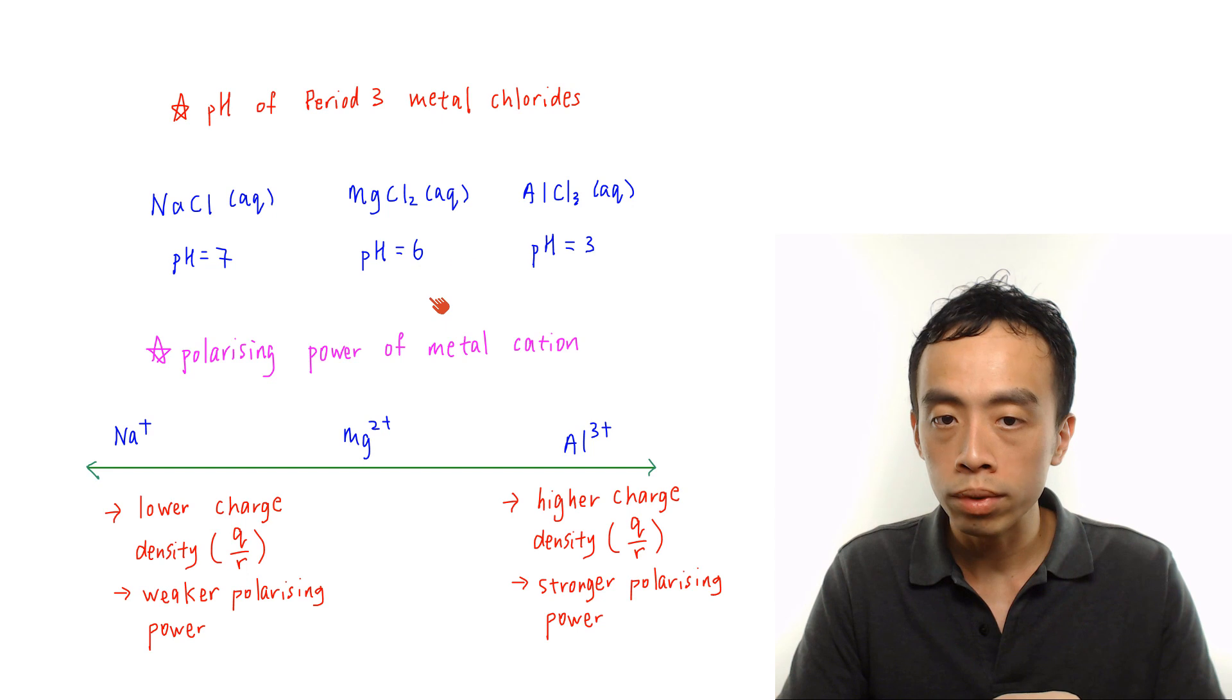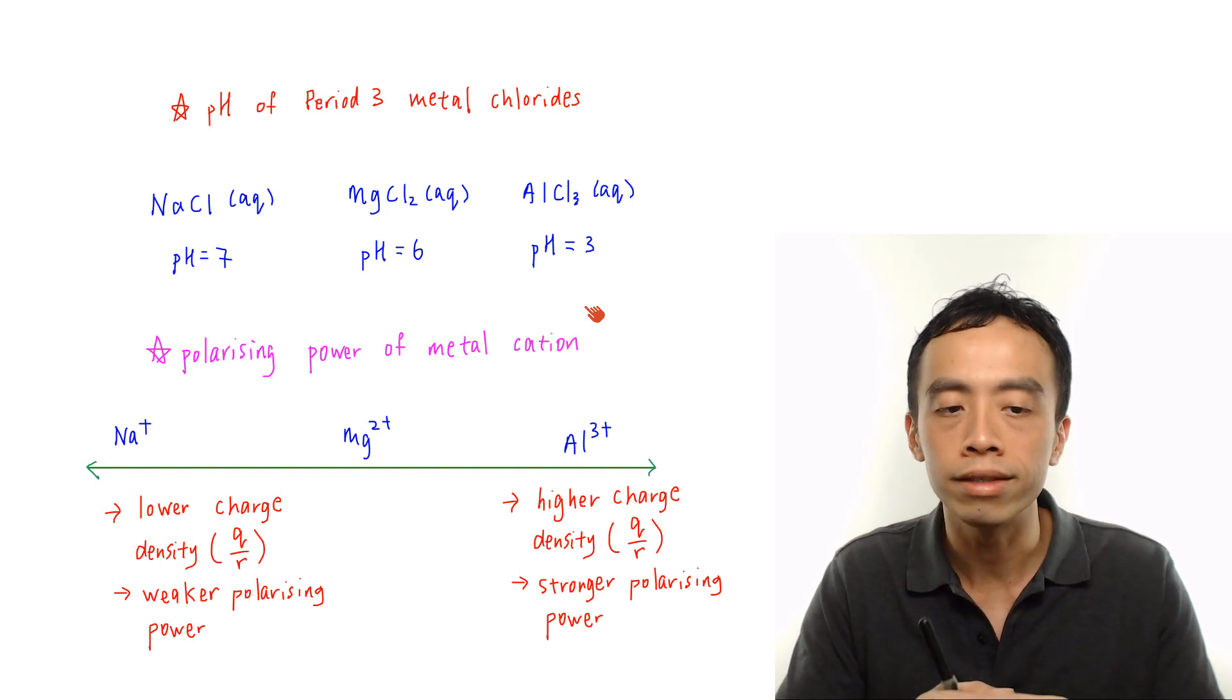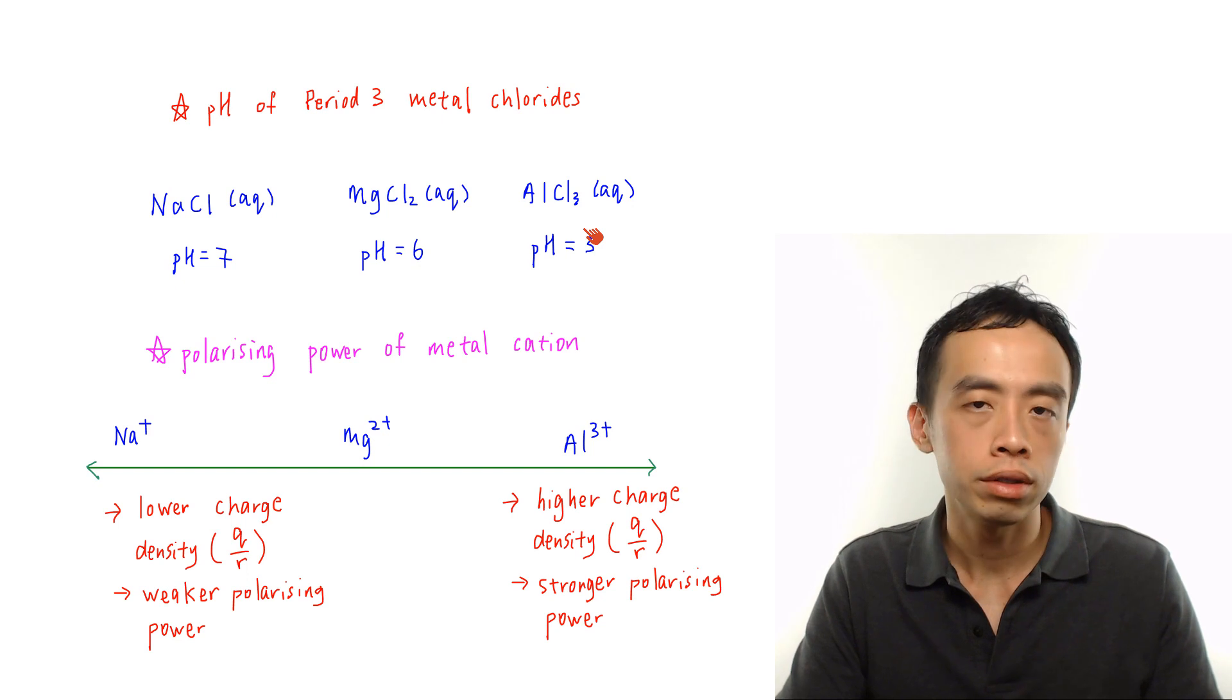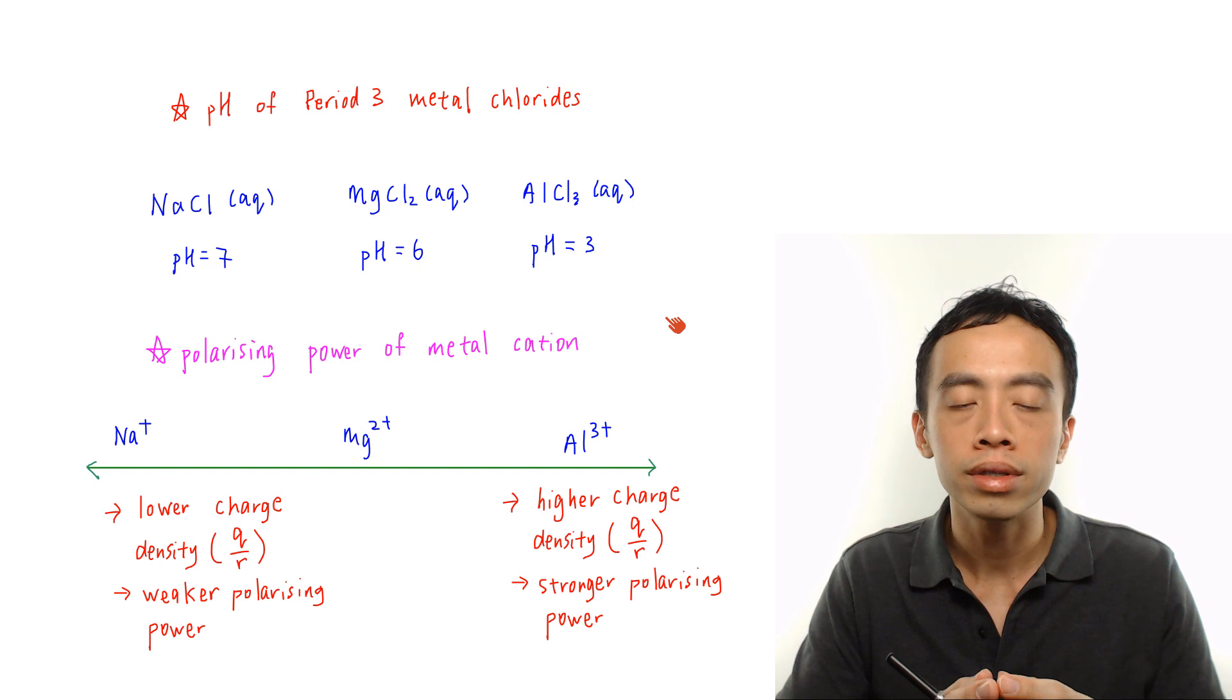pH of aluminum chloride is pH equal to 3. The pH is even lower, so therefore it is even more acidic. Now the reason why the pH of these 3 metal chlorides decreases gradually is linked to the polarizing power of the metal cation.